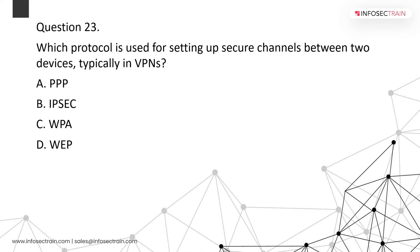Which protocol is used for setting up a secure channel between two devices, typically in VPN? The answer is IPSec. IPSec acts at the IP layer, allowing it to be used for insecure connections and remote access to an entire network rather than just a single device.